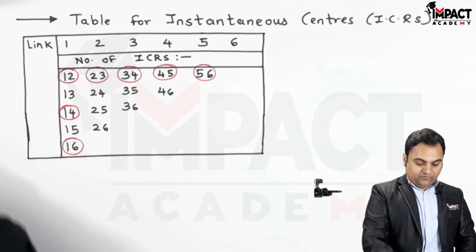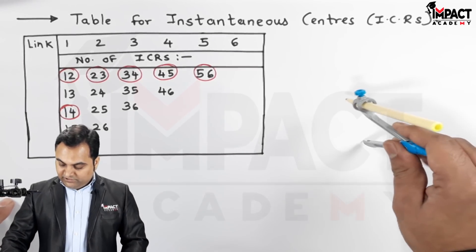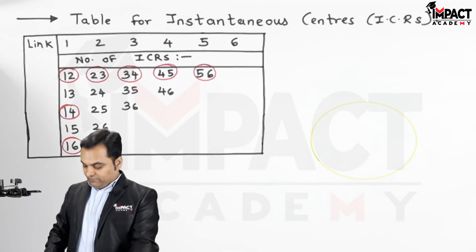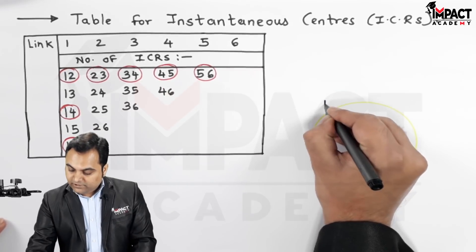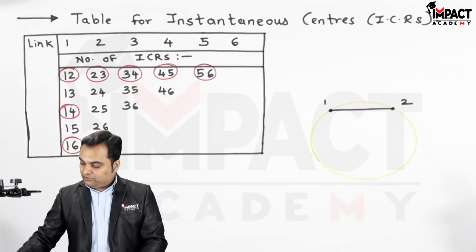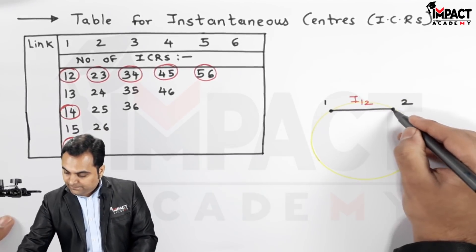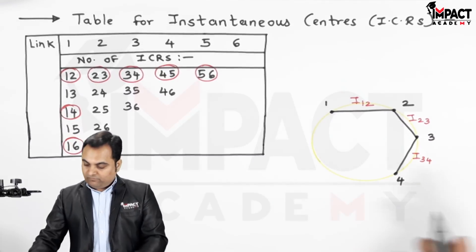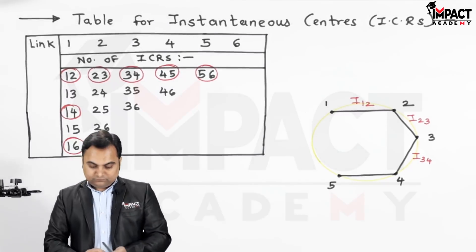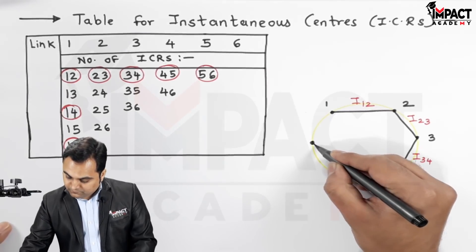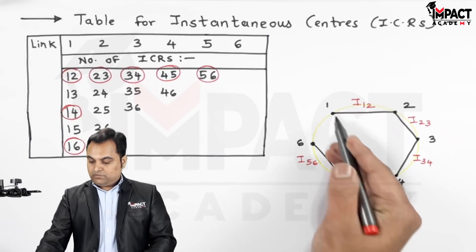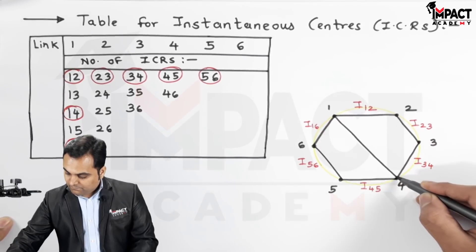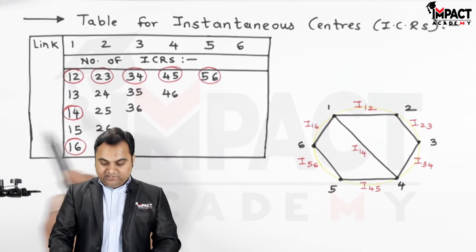For the remaining ICRs — which are neither fixed nor permanent — we draw a circle of any convenient proportionate radius. On the circle we mark the links: 1 connected to 2 (I12), 2 to 3, 3 to 4, 4 to 5, 5 to 6, 1 to 6, and 1 to 4. Now we need to find all remaining ICRs starting with I13.